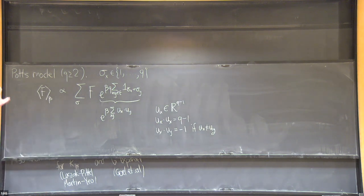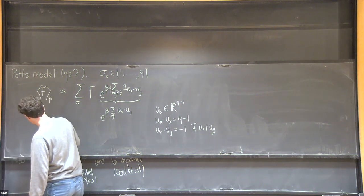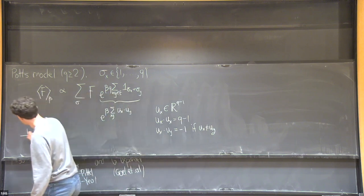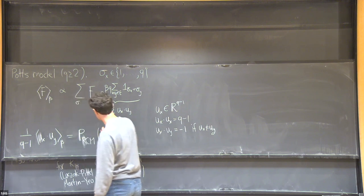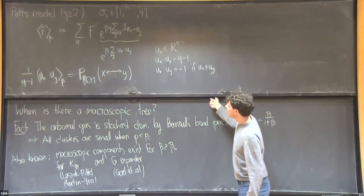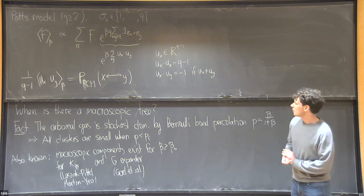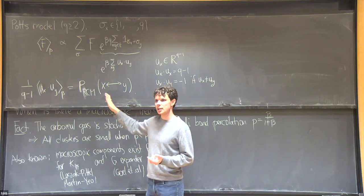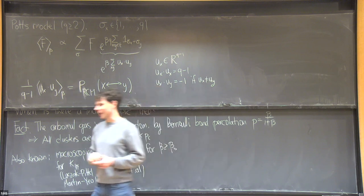The relation to the random cluster model is that the spin-spin correlation of the Potts model divided by one minus 1/(Q-1) equals the percolation probability in the random cluster model. This construction makes sense when Q is at least two, and it turns out there is a version exactly analogous to this statement that holds for Q equals zero.